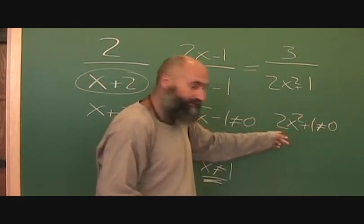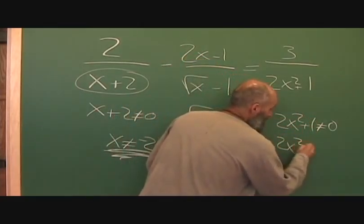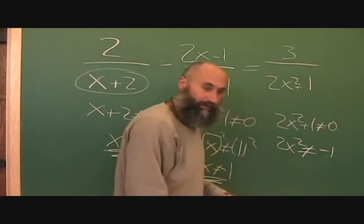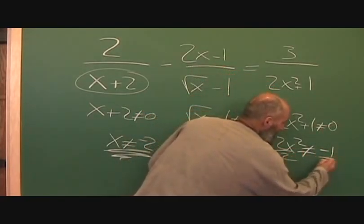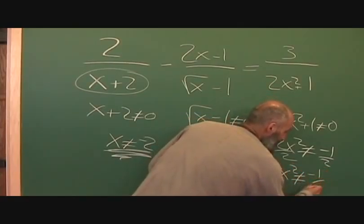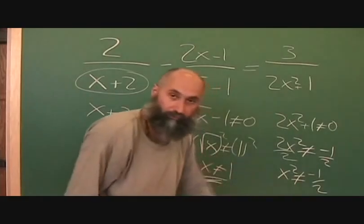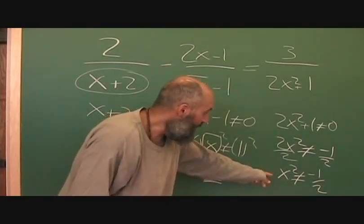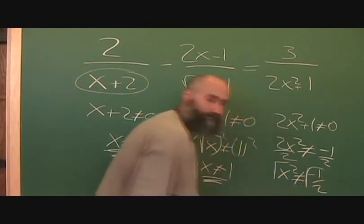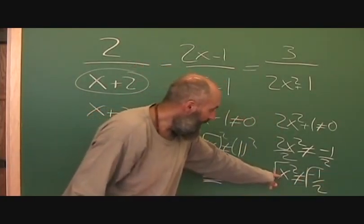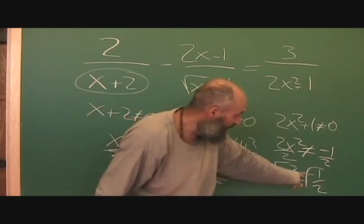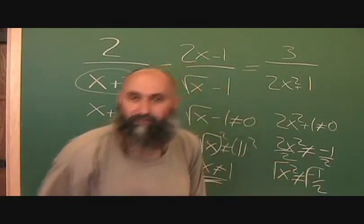For the third one, you move the 1 over and solve for x. You get 2x squared can't equal negative 1, divide by 2, so x squared can't equal negative 1 over 2. Then you square root both sides, and you get x can't equal the square root of negative 1 over 2.